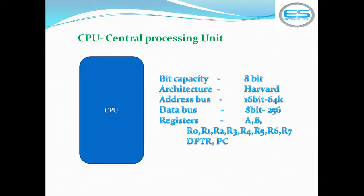Depending on the address bus size, you can calculate how many memory locations you can access. The address bus is 16-bit, so you can access 2^16 memory locations, which equals 65,536 or 64K locations. The data bus size decides the value you can store in one location. With an 8-bit data bus, one location allows storing a maximum value of 0 to 255.